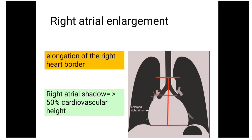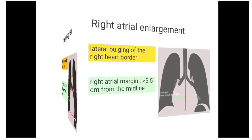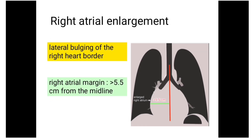When the right atrium is enlarged, there is elongation of the right atrial border. The length of the right atrial convexity exceeds 50% of the mediastinal cardiovascular shadow. There is lateral bulging of the right atrial border, and the right atrial margin is more than 5.5 cm from the midline.